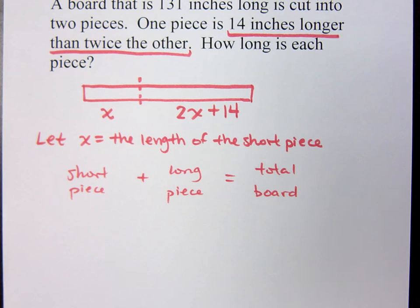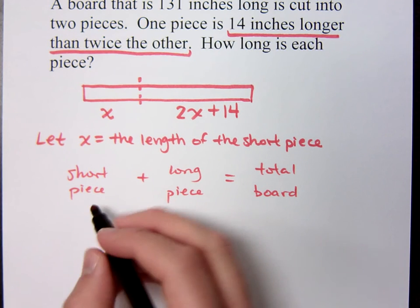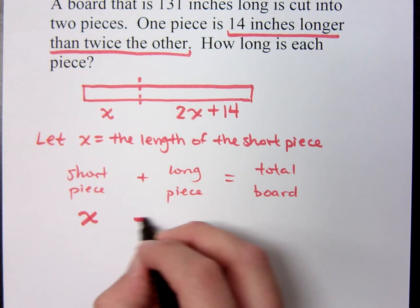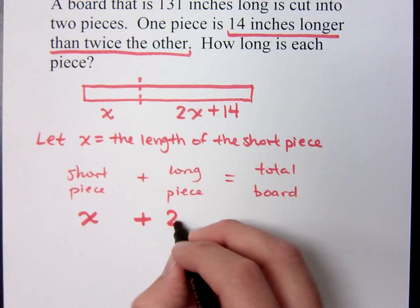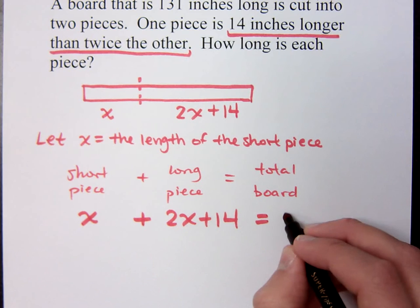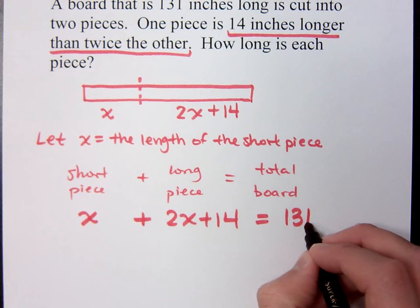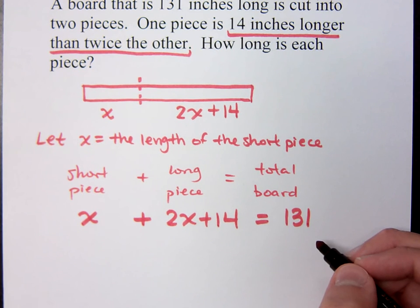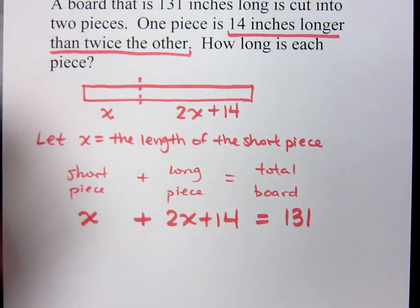So how do I represent the short piece? x. How do you represent the length of the long piece? 2x plus 14. And when their powers combine, I have 131. Don't go change the numbers on me. It's 131. All right.